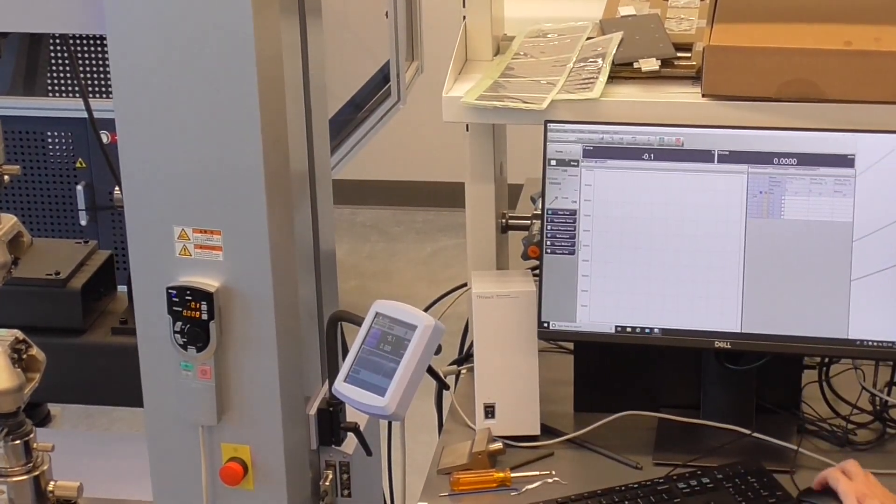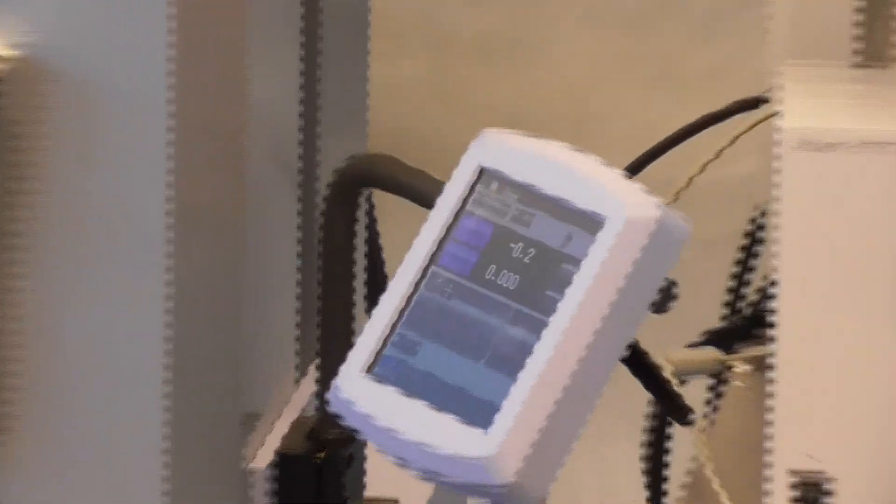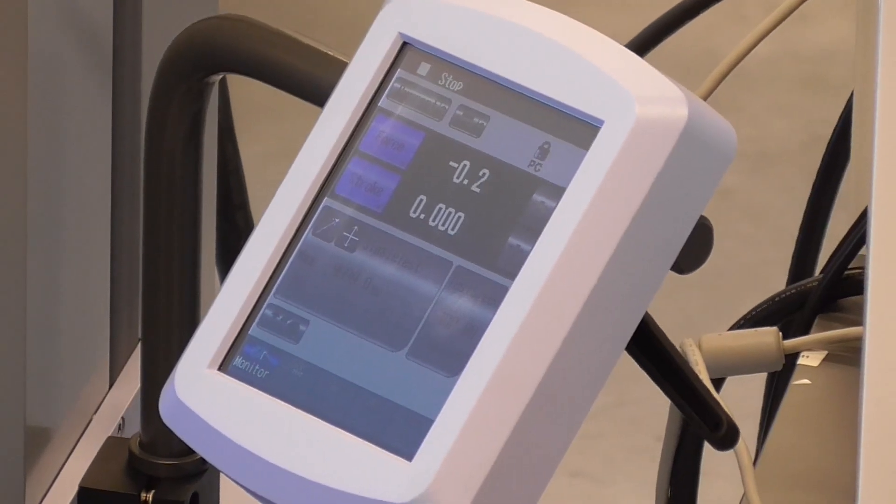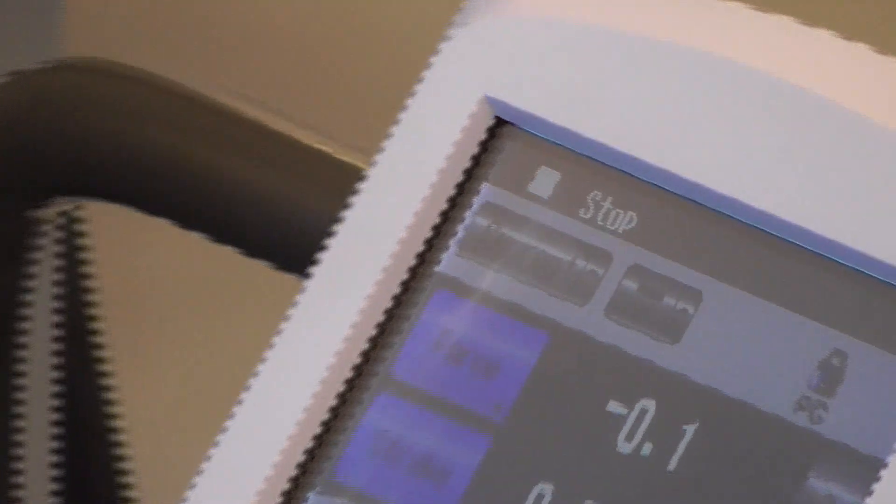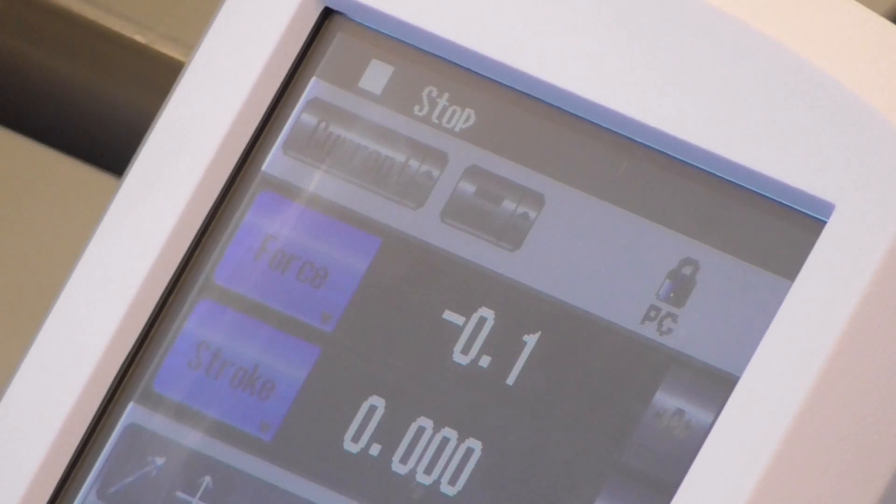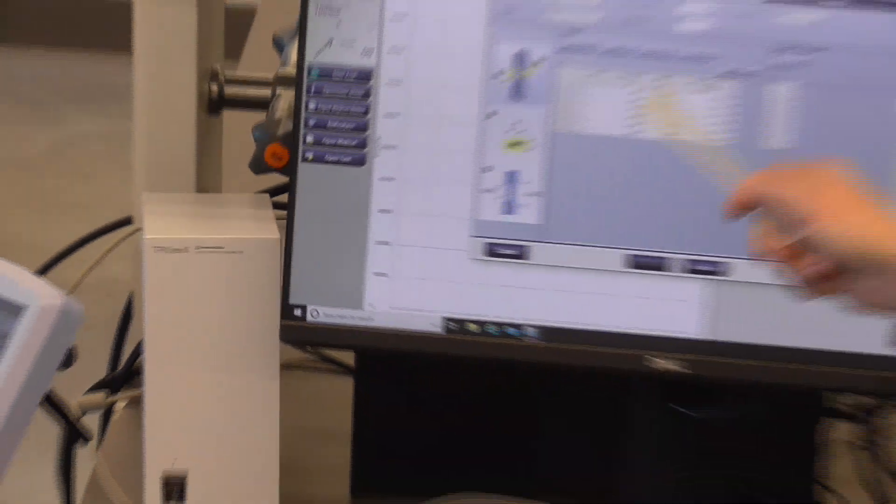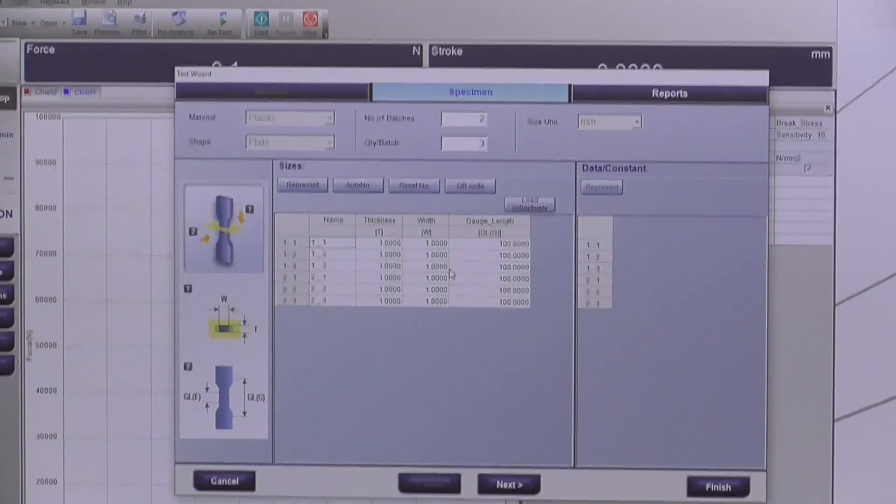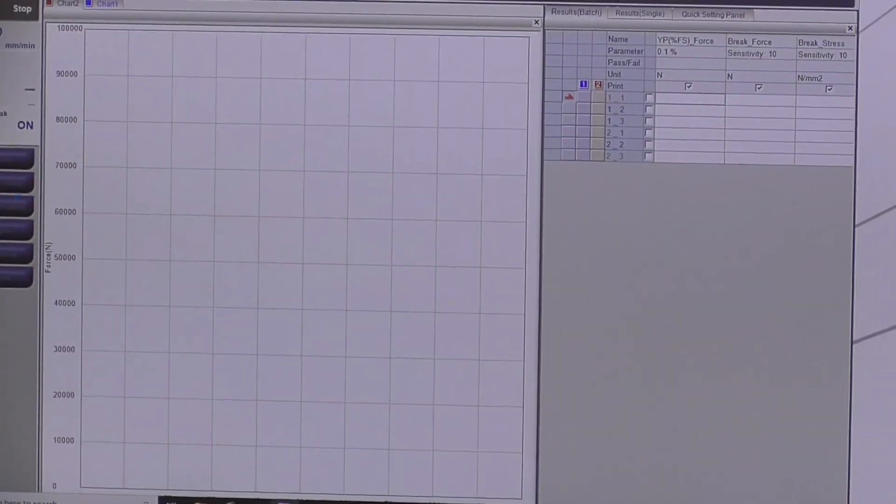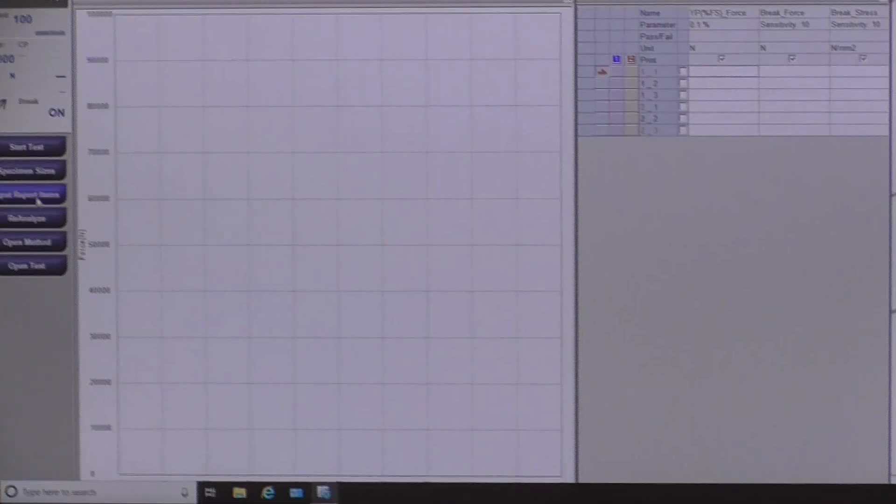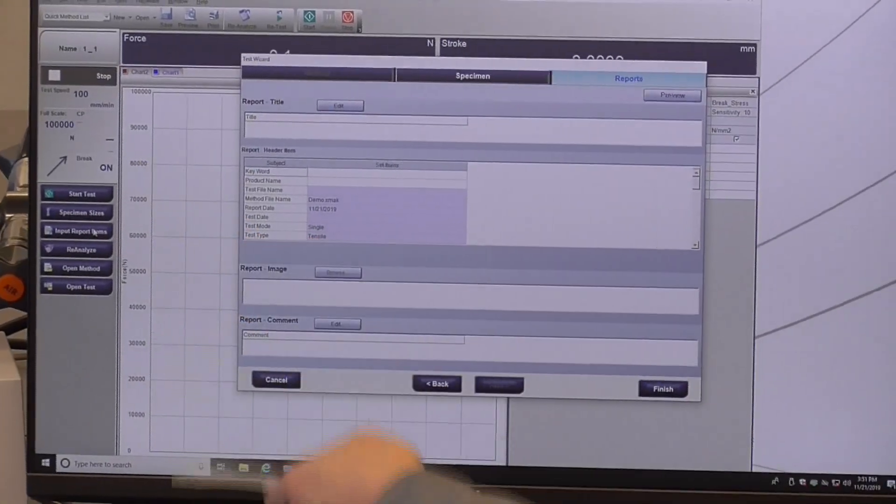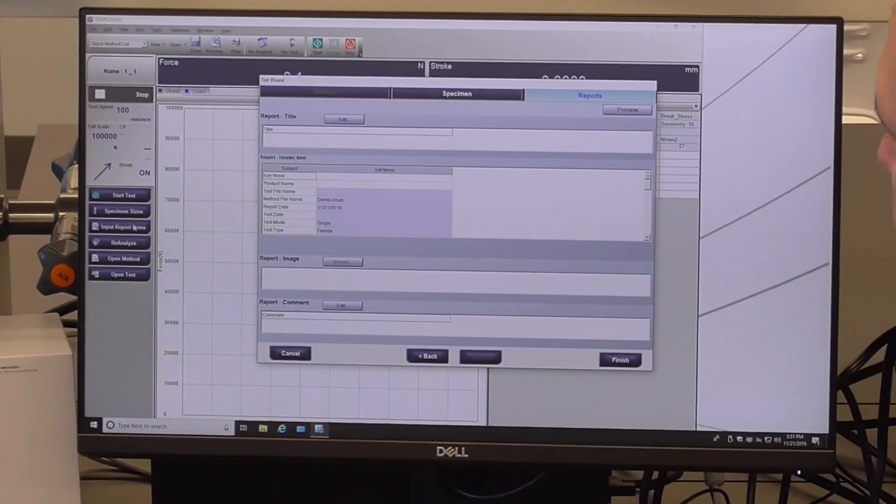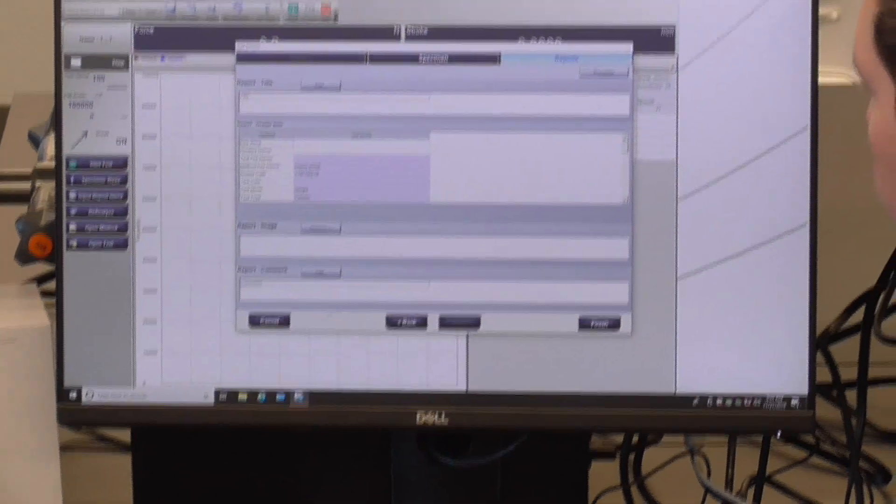So like I was saying, when you're writing the method, you can write in your specimen sizes. Rarely, when you're writing your method, do you know your exact specimen sizes. So, specimen size right here, you can bring it up. Add all your specimen sizes as you're micing it up before you run the actual test itself. You can also change some of the report parameters that you want from the buttons on the left.